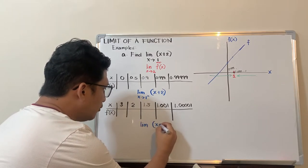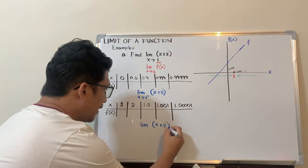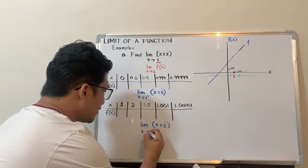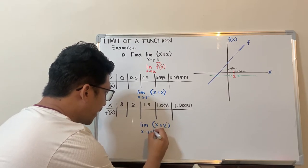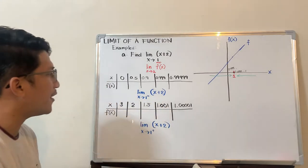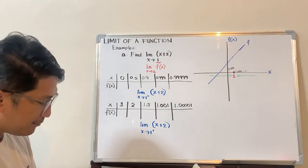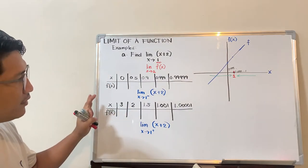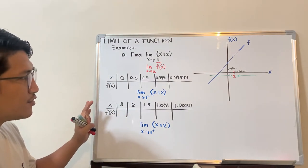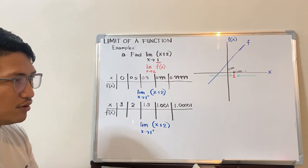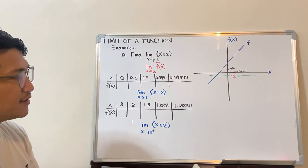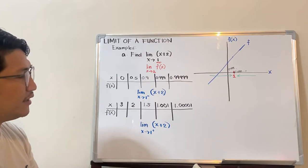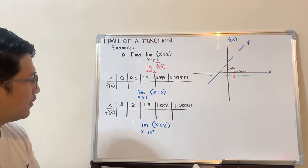So we have 0.999 dot dot dot from the left, and from the right we have 1.000 dot dot dot approaching 1. Here we are trying to evaluate the limit of the function x plus 2 as x approaches 1 positive—that means from the right.